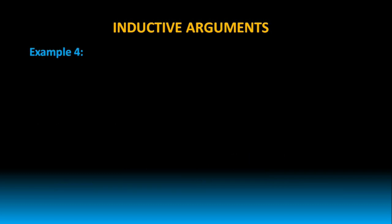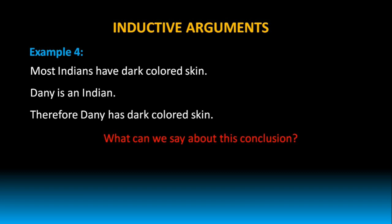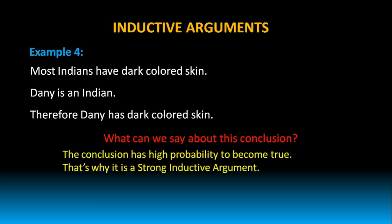Let us take one more example. Most Indians have dark colored skin. Danny is an Indian. Therefore, Danny has dark colored skin. What can we say about the conclusion of this argument? The conclusion has a high probability of being true. That's why it is a strong inductive argument, because it is moving from observations to a conclusion.